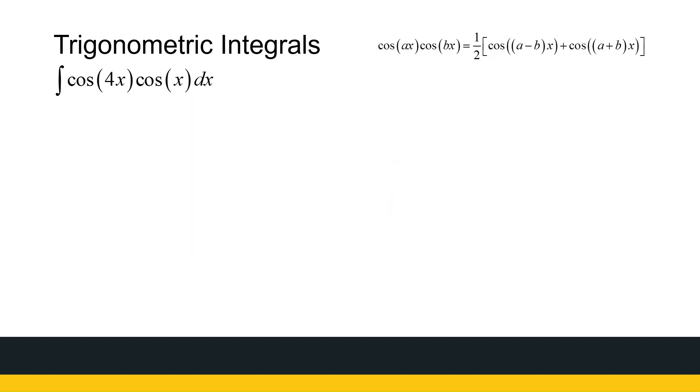Similarly, if I've got cos(4x) times cos(x), now my value of a is 4, my value of b is 1, and this is the formula I'm going to use. I'm going to use this identity to simplify this integral.